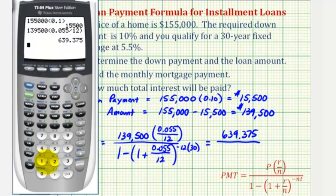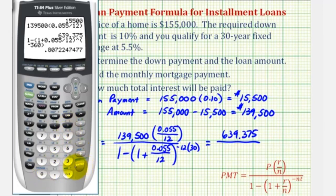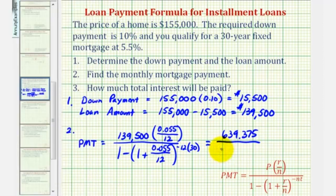And now for the denominator, we'll have one minus the quantity one plus 0.055 divided by 12, raised to the power of negative 360. And enter. So we have approximately 0.80722. And now we'll go ahead and find this quotient.